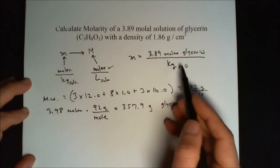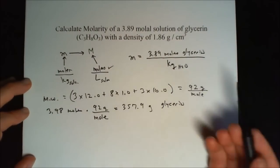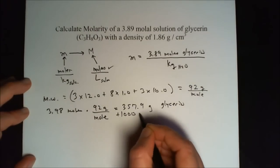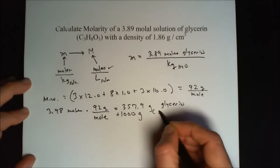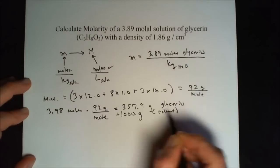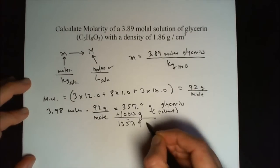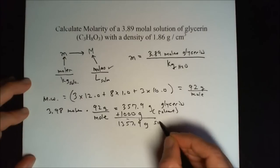Now we add it to a kilogram. Remember that a kilogram is 1,000 grams of water. So that's plus 1,000 grams, our solvent. That gives us 1,357.9 grams of solution.